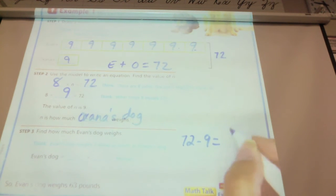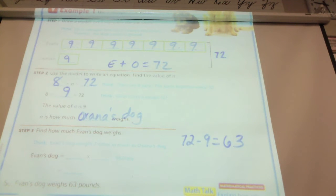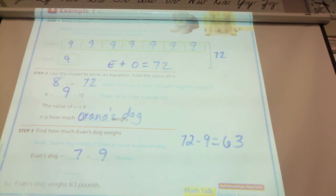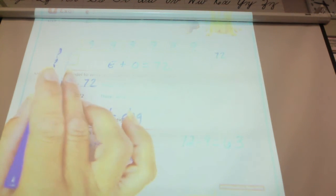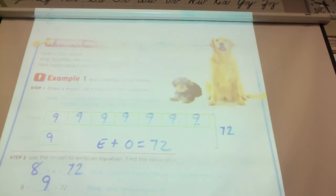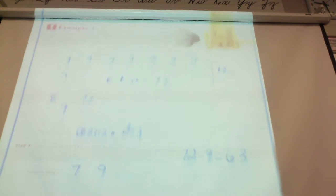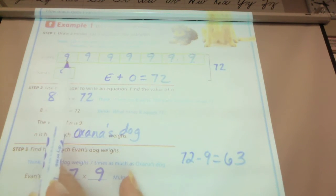Is there another way I could figure it out? 7 times 9. And where did you get 7 times 9 from? 7 times as much as the weight of Oksana's dog. So, up here it tells us that he weighed, oh wait, up here. It says that Evan's dog weighs 7 times as much as Oksana's. Also, if we look at our model, how many boxes for Evan's?